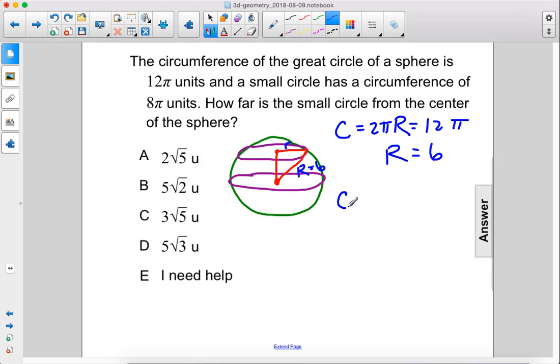Alright, moving on, we have the circumference of the small circle, 2π lowercase r. That equals 8π. Therefore, lowercase r equals 4.